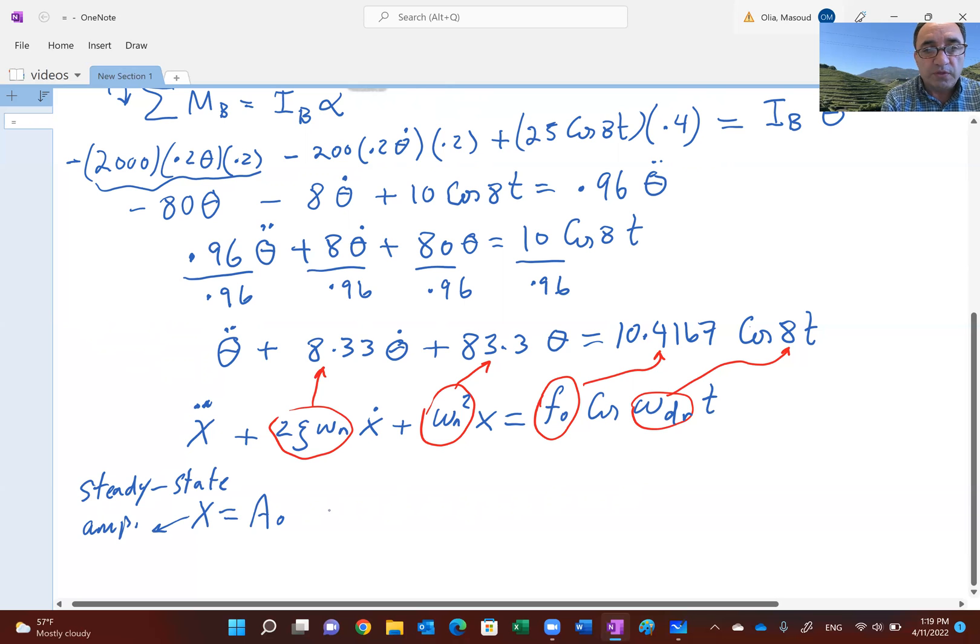Then it's equal to, and this is the template I was talking about: F_0 over the square root of (omega_n squared minus omega_dr squared) squared plus (2 zeta omega_n omega_dr) squared, and this whole thing is under the square root.